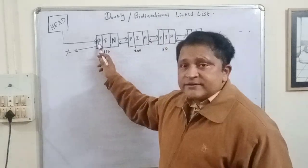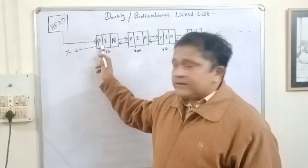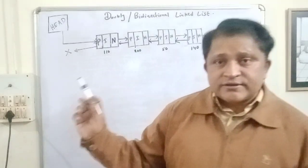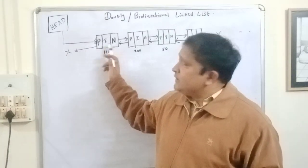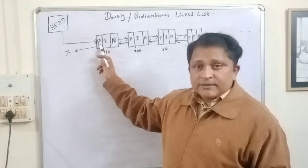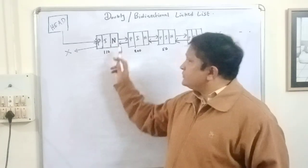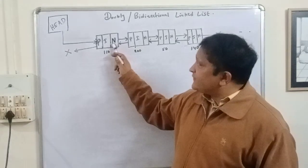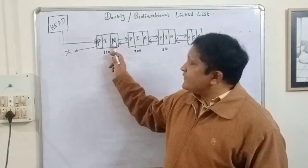In singly linked list, we have only one pointer part: the info, which carries the data element, and the next part, which is a pointer that points to the next connected node — it contains the address of the next connected node. But in doubly linked list, we have three parts: previous, info, and next. The info part stores the data element. The previous pointer stores the address of the previous node, and the next pointer stores the address of the next node.